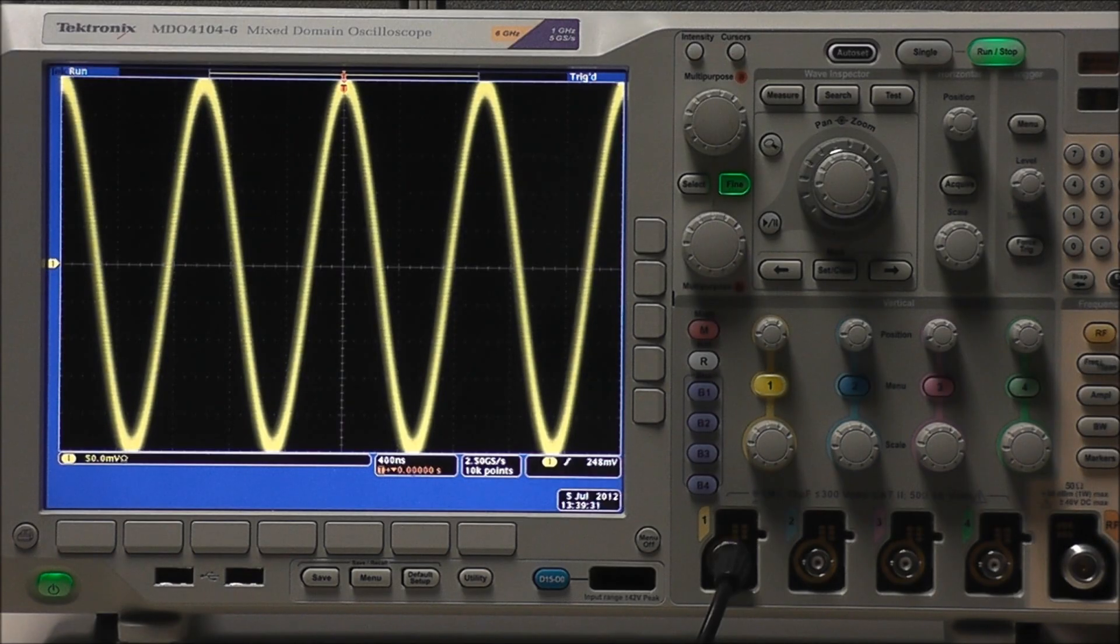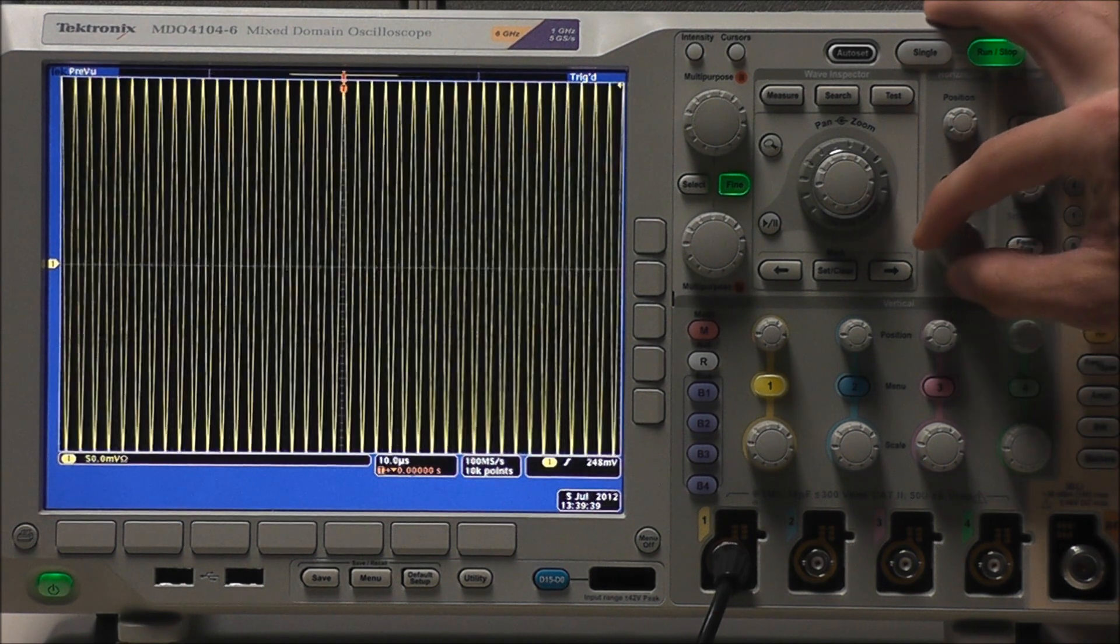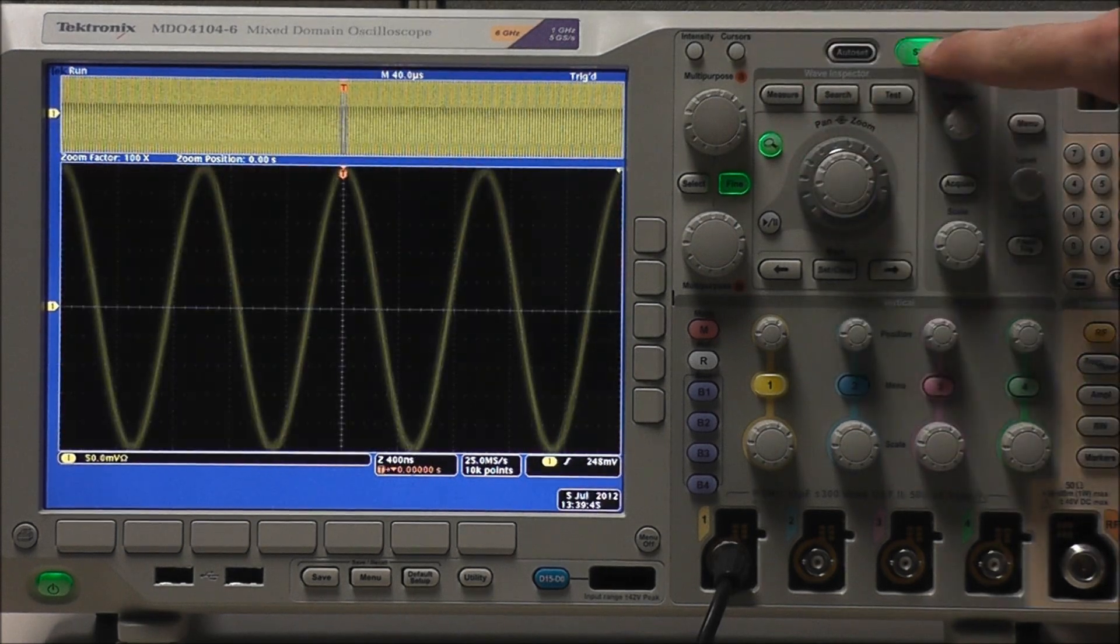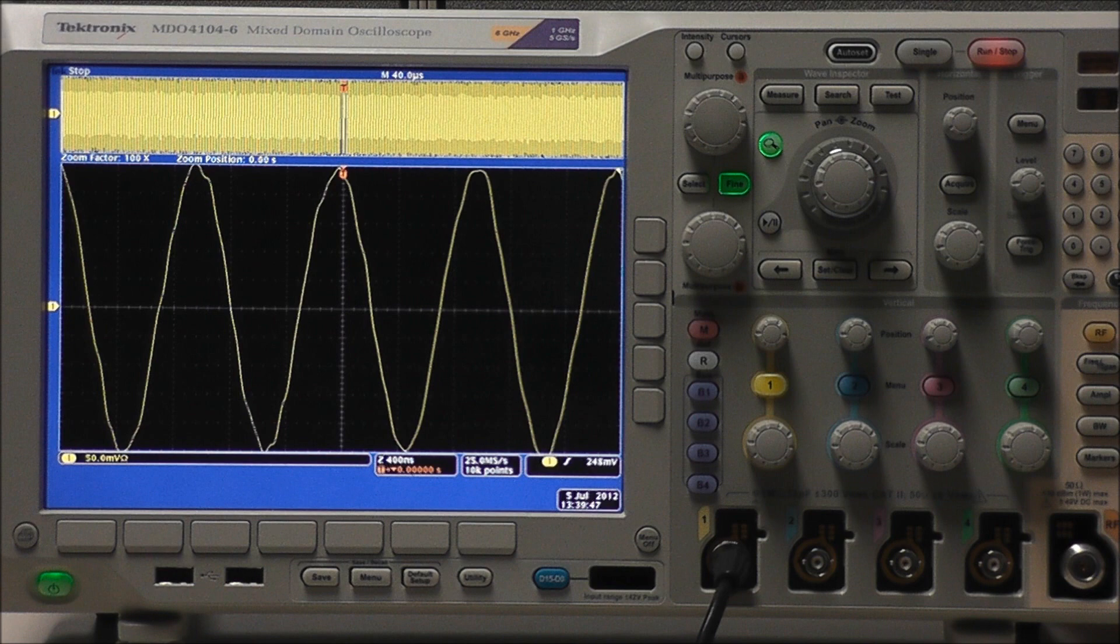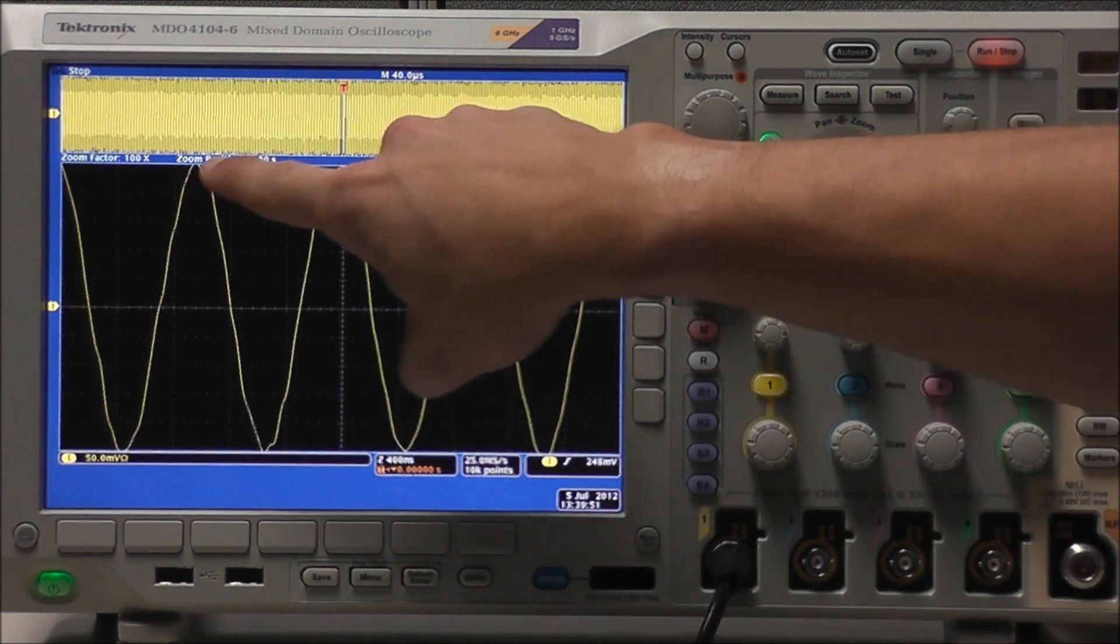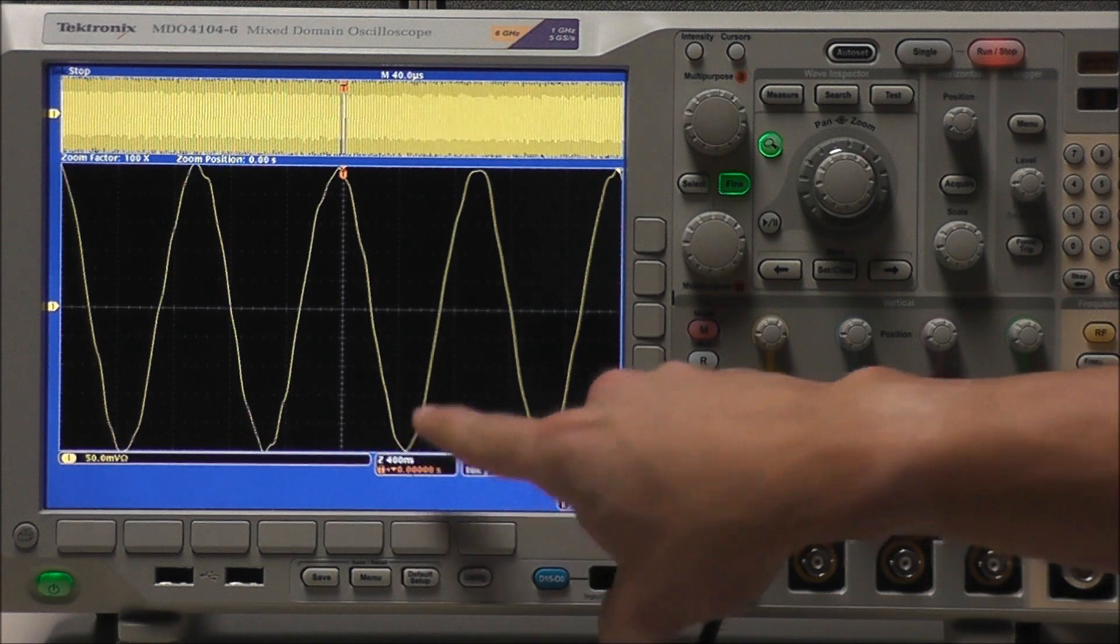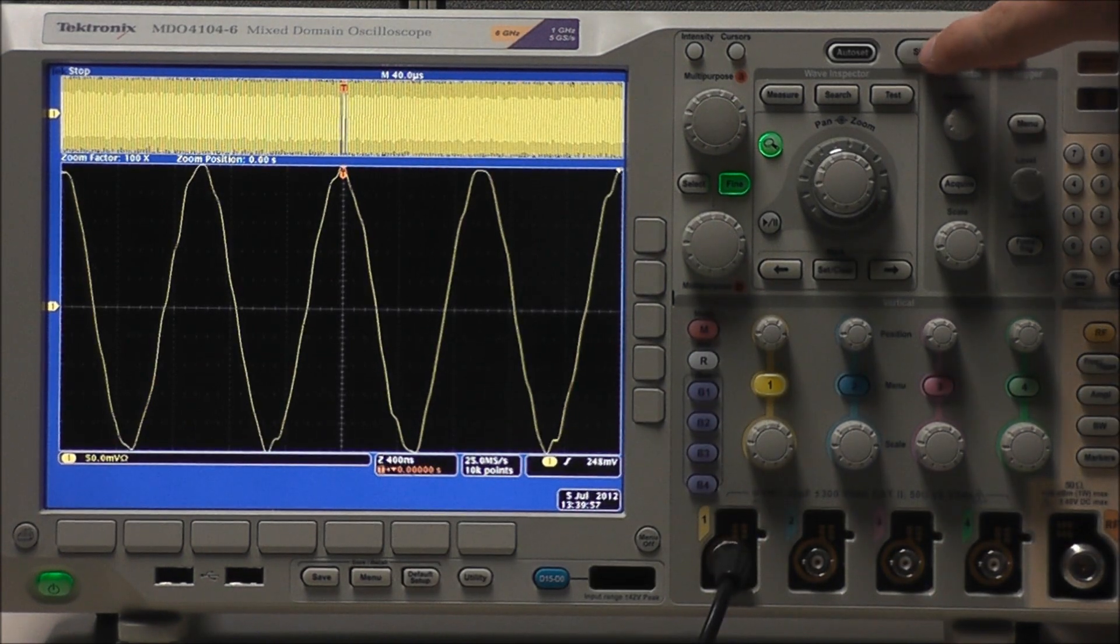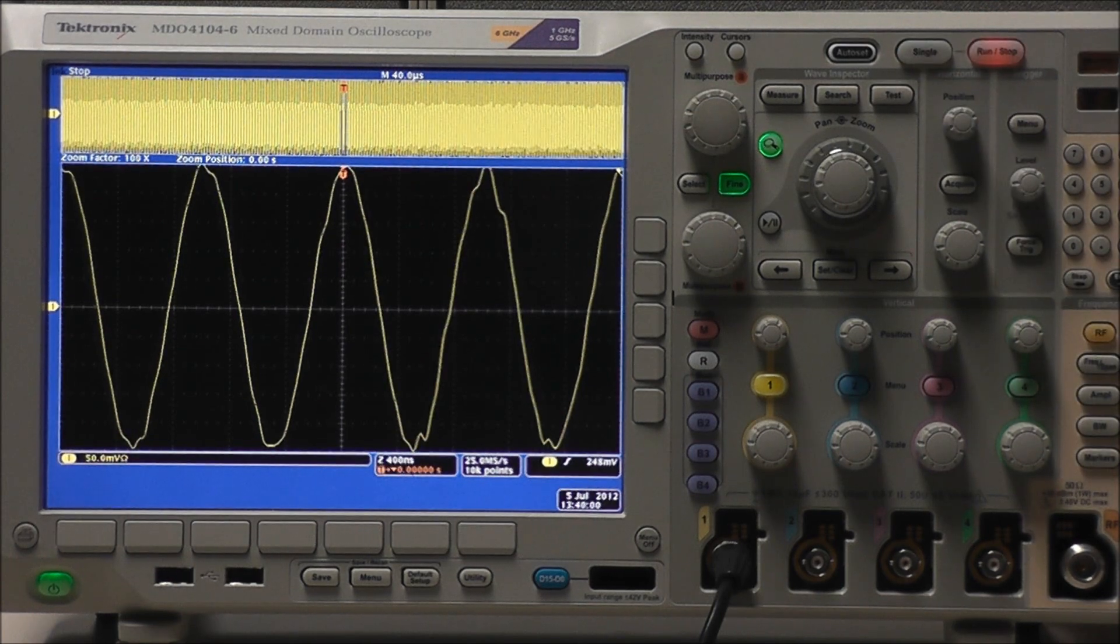So now we will look at how high-res and sample modes compare and the best way to do this is to look at single acquisitions at a sample rate much lower than the scope's maximum sample rate. So let's scale out until we're at 25 mega samples per second. Zoom in as far as we can and select single acquisition and we can see how noisy our signal is. And it looks a little rough, especially around the peaks here. And as I continue to press single acquisition, we can still see the peaks are really rough there.